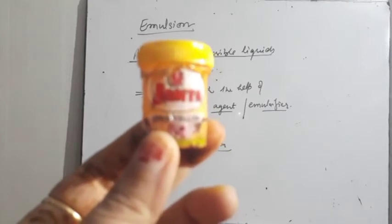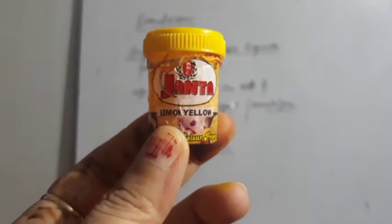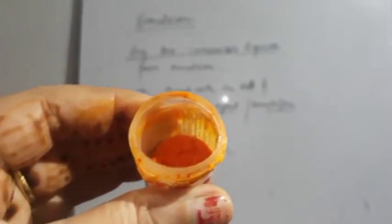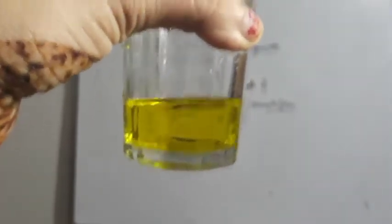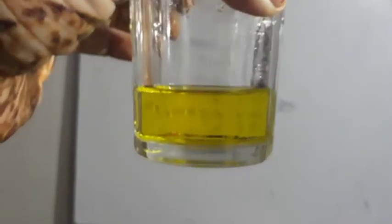Ye mera food color hai — lemon yellow color. Ye water-soluble dye hai. Maine thodi si dye li aur isko paani mein dissolve karke dikha rahi hoon. Ab mujhe aapko emulsion dikhani hai — pehle humne oil-in-water emulsion taiyaar ki thi. Aap observe karo — dye maine mix kar di is emulsion mein. Aap droplets ki upar dhyaan dena — usme color dikhai nahi dega.